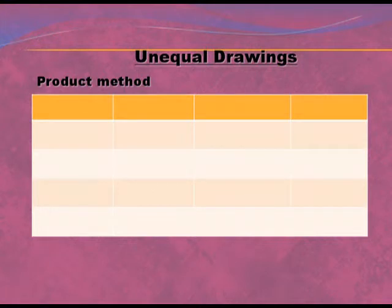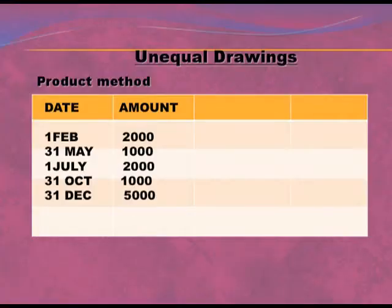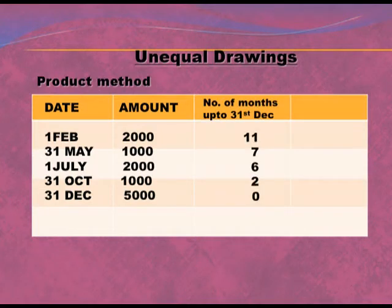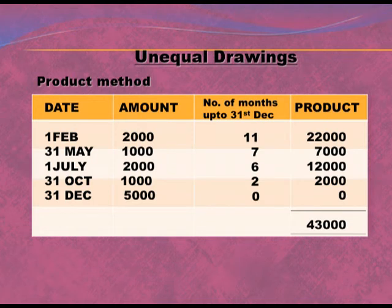Now we move to unequal drawings. For example: 2,000 drawn on 1st February, 1,000 on 31st May, 2,000 on 1st July, 1,000 on 31st October, and 5,000 on 31st December. To solve this, we calculate the number of months remaining up to 31st December: 1st February = 11 months, 31st May = 7 months, 1st July = 6 months, 31st October = 2 months, 31st December = 0 months.